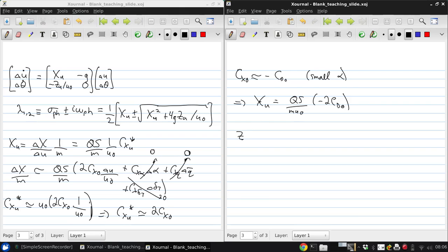We can do exactly the same process for ZU, which gives ZU is QS over M U infinity times CZU star, where CZU star is going to be approximately equal to 2 CZ naught, and for small alpha, this gives us that CZU star is approximately negative 2 CL naught in a trim state lift coefficient, so that ZU is QS over M U infinity times negative 2 CL naught.